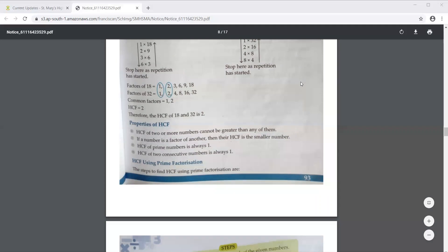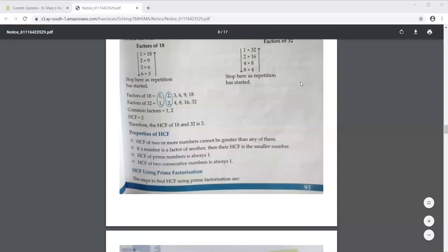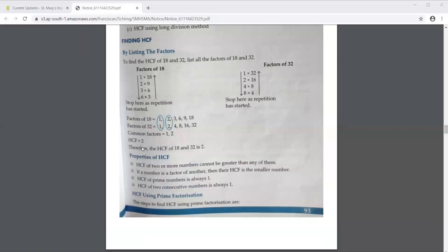What are the numbers? 18 and 32. When you find out the HCF, you get 2. So it is not bigger than 18, and it is not bigger than 32.